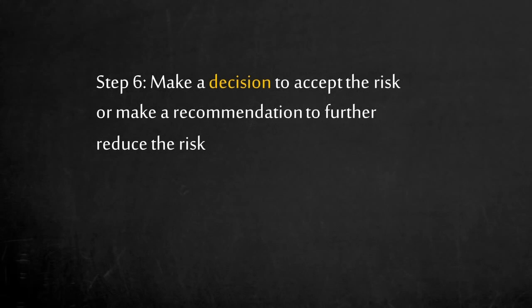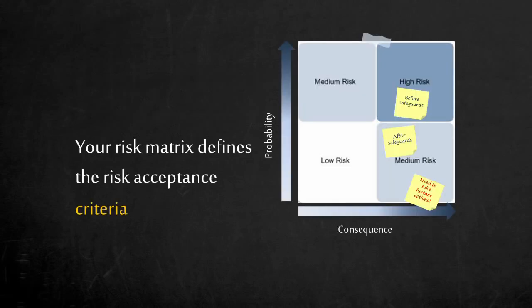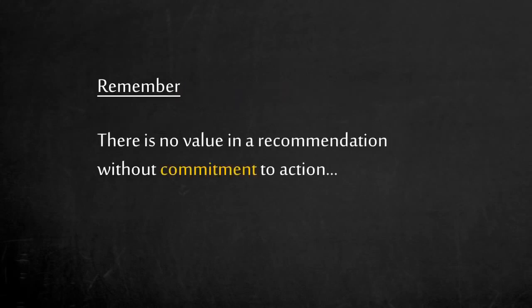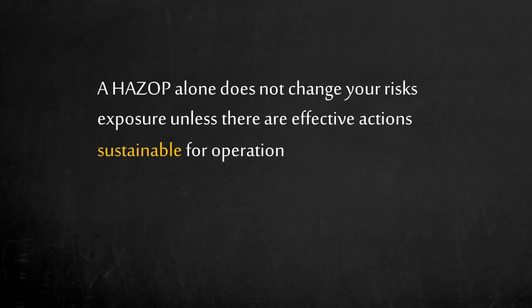Step 6: The final step is to make a decision to accept the risk or make a recommendation to further reduce it. By lowering the probability using a safeguard, the risk is lowered. Your risk matrix defines the risk acceptance criteria. Remember — there is no value in a recommendation without commitment to action. It is important that each recommendation gets buy-in from both engineering and operations. A HAZOP alone does not change your risk exposure unless there are effective actions sustainable for operation.